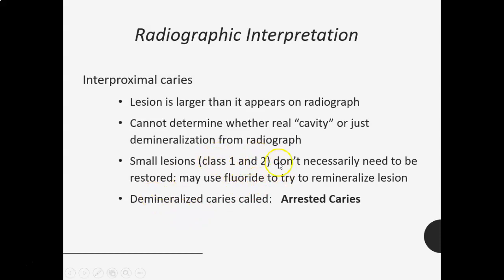Small lesions — Class 1 and Class 2 — don't necessarily need to be restored. Some can be remineralized by using fluoride, improving oral hygiene, and reducing the number of acid attacks on the tooth. Sometimes the doctor will say if you improve your oral hygiene and kick up your fluoride, we can watch these small incipient Class 1 lesions. Demineralized caries that have stopped are called arrested caries, because the caries process has stopped.